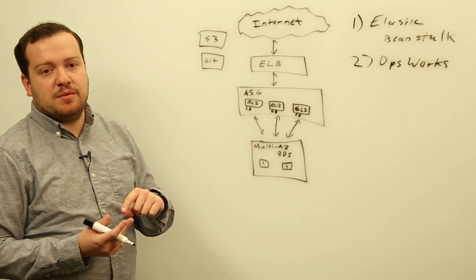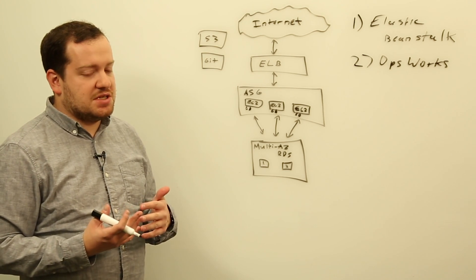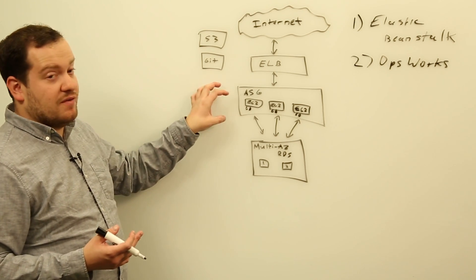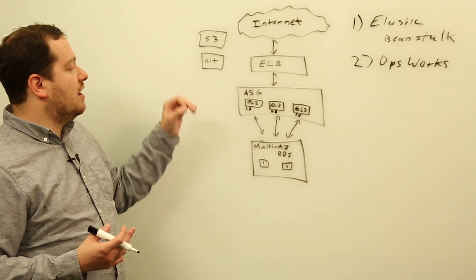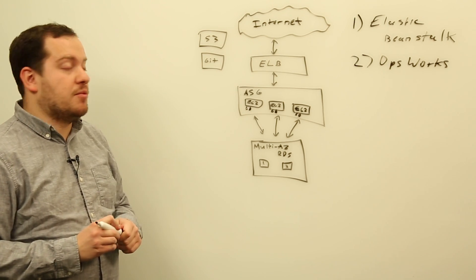And it's going to deploy whatever the recipes tell it to. So that could be code, that could be applications, that could be dependencies for those applications. So it can be pretty flexible. And then you can break up your application into tiers. So let's say you have a web tier and an app tier. You can deploy different recipes to different parts of your application.